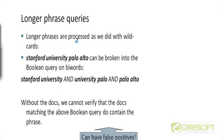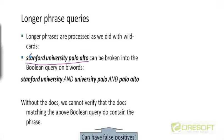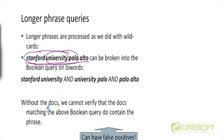What about longer phrase queries? What if your query wasn't just two terms like Stanford University, but four terms: Stanford University Palo Alto? Well, this longer query can be broken down into a series of phrase queries. If we have built a biword index, we can look up all documents which have the phrase 'Stanford University,' look up documents with the phrase 'University Palo,' and look up documents with the phrase 'Palo Alto,' and then take the intersection of those three lists. So we can transform this into a query on a biword index.